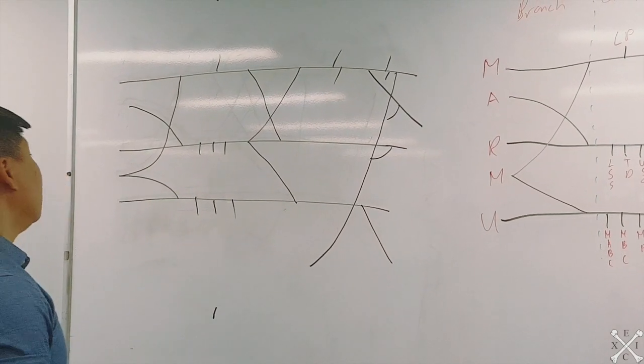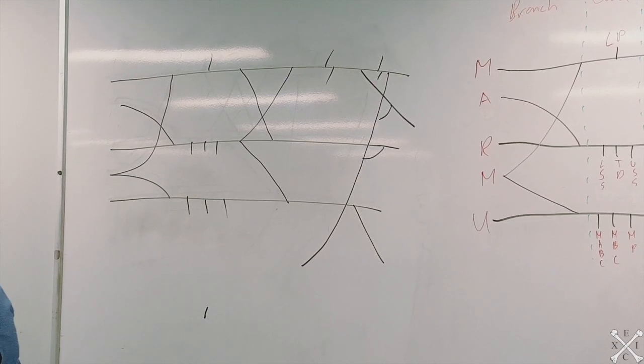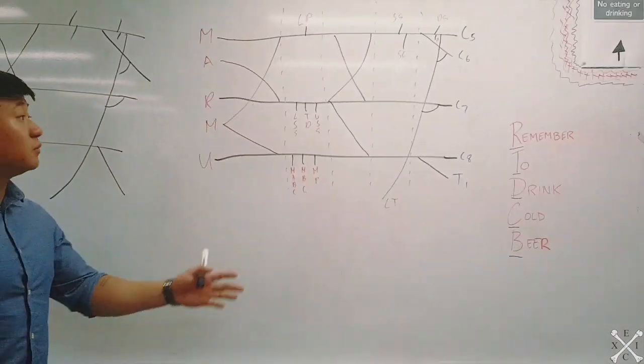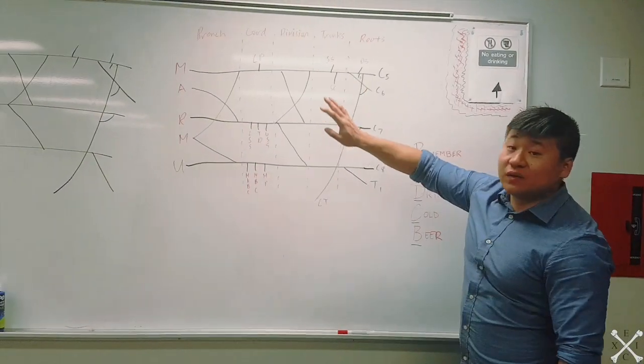That's the brachial plexus. If you practice enough, you can do this in under 10 or 15 seconds. Now I'm going to teach you the actual nerves of the brachial plexus, but first, there are five divisions.